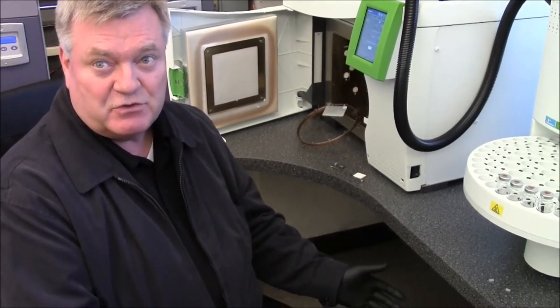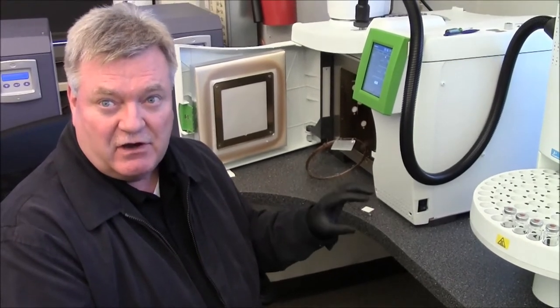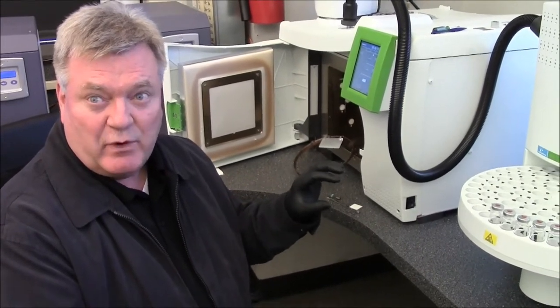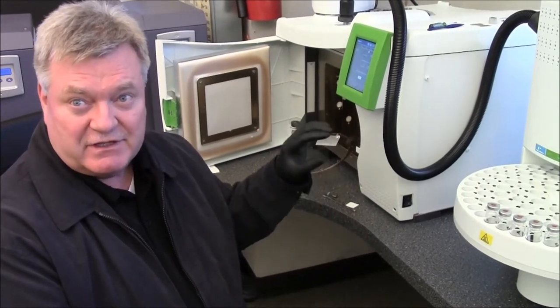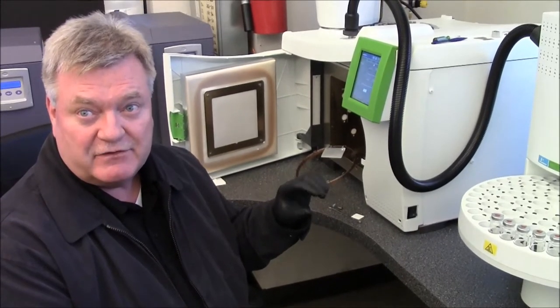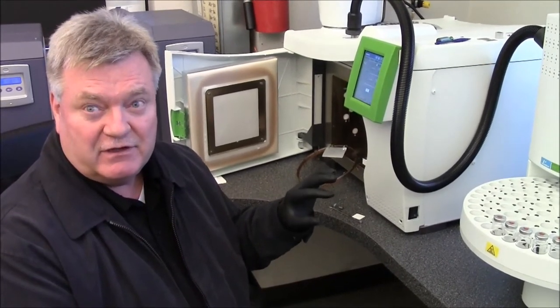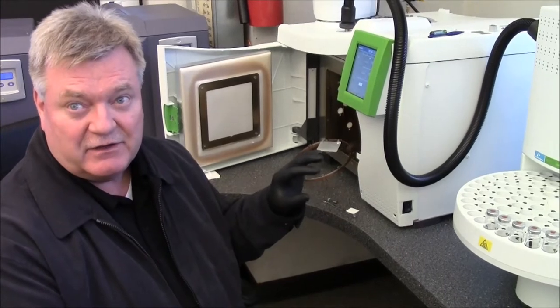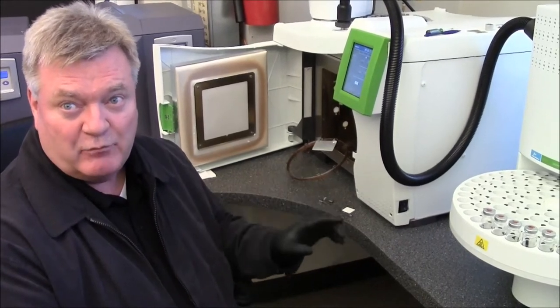If you ever have a leak, sometimes that will destroy your column. Or if there's no carrier flow and it gets heated up, then it will destroy it because the stationary phase inside of the column is actually kind of a wax type material. If it doesn't have the carrier flow going over it to kind of keep it cool, kind of in a rigid state, then it will actually just melt like wax and pull to the bottom.